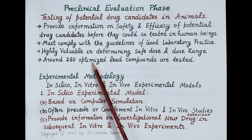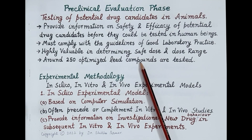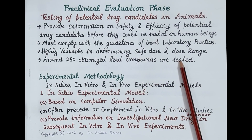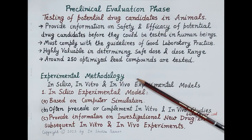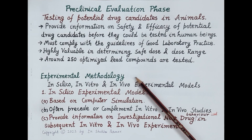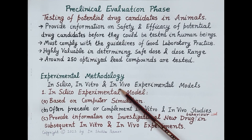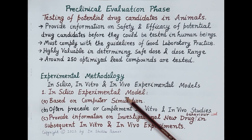Around 250 optimized lead compounds generated during new drug discovery are tested in the preclinical evaluation phase. A series of experiments are performed using in silico, in vitro, and in vivo experimental models. Let's discuss these experimental models used during preclinical evaluation.